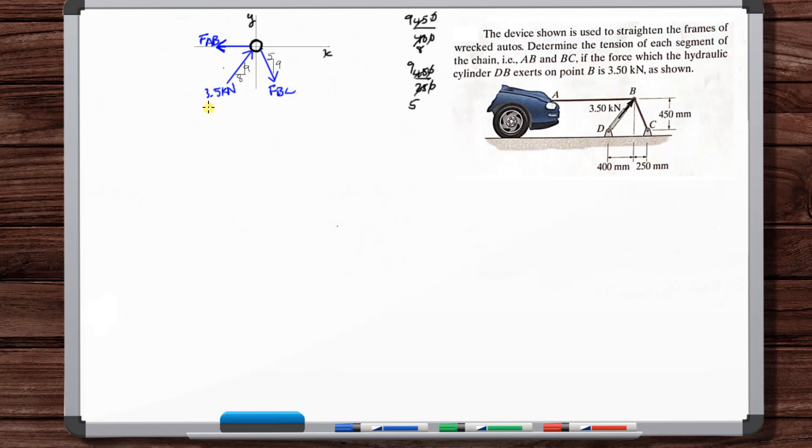Let's sum the forces in the X. We know that they must be equal to zero. This particle is not moving, not accelerating. So we've got minus F_AB plus 3.5. And we're using this slope ratio method instead of sines and cosines.